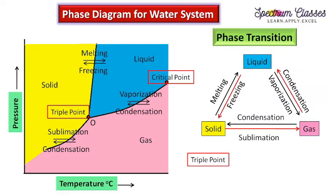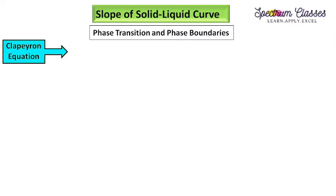After this, it is important to understand how we draw the solid-liquid equilibrium curve, because it can have a positive slope as well as a negative slope. This is decided by the Clapeyron equation, which is used to determine phase transitions and phase boundaries. The Clapeyron equation is: dP/dT = ΔS of transition / ΔV of transition, where P is pressure, T is temperature, S is entropy, and V is volume.